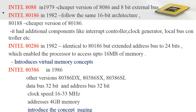In 1982, Intel introduced the 80186 processor, following the same 16-bit architecture of the 8086 and 8080. Intel also introduced the 80188, a cheaper version of the 80186, which had certain additional components like an interrupt controller.